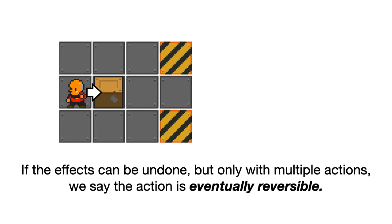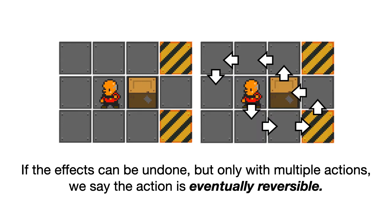Some actions are more complex than this. They can be undone, but only with multiple actions. So in this case, if I push this box to the right, this action can't be undone. In Sokoban, you can't pull a box. But if I were to walk all the way over to the other side of the box, push it back, and then walk back to where I was, that would undo the action. So when there's a chain of actions that reverse something, we call this eventually reversible.